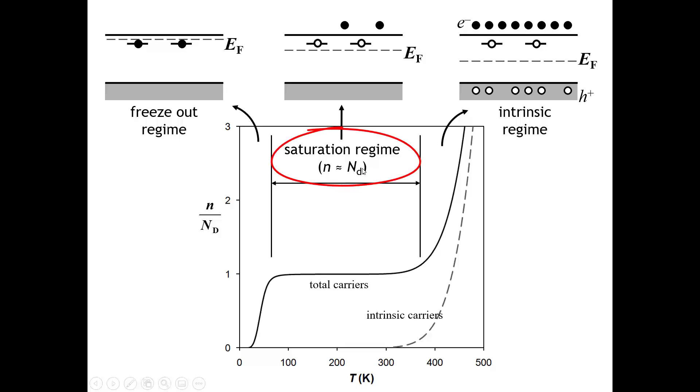And in this regime, you have enough thermal energy that you can activate all of the carriers that come from the dopants. But the amount of carriers that are coming from exciting things from the valence band all the way up into the conduction band is minimal. And so over this temperature regime, there's really not very much temperature dependence to the conductivity. And actually, for a lot of devices, this is an advantageous place to operate.